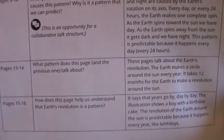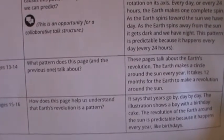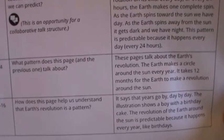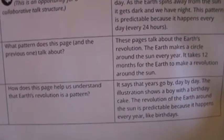Why is it a pattern that we can predict? For pages 9 and 10, pages 13 and 14: what pattern does this page and the previous one talk about? And pages 15 and 16: how does this page help us understand that Earth's revolution is a pattern? Then pages 21 through 22: what pattern does this section show, what causes this pattern, why is it a pattern we can predict? That section was talking about seasons.